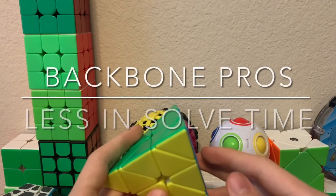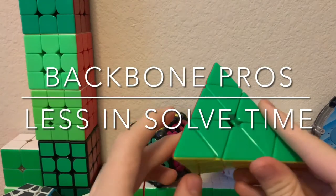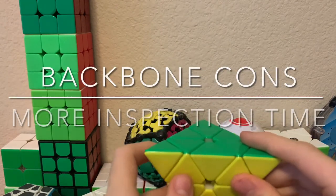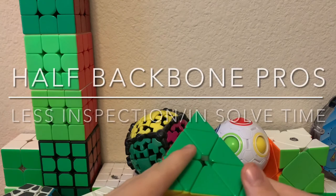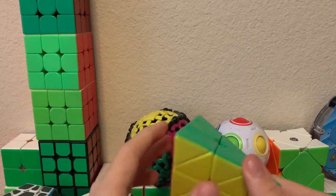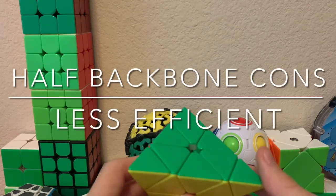For the backbone method the main advantages are that you use a lot less time in the solve but you use a lot more time with inspection. And the main advantages with half backbone are that you use a lot less time during inspection and during the solve but you have a less efficient solution.